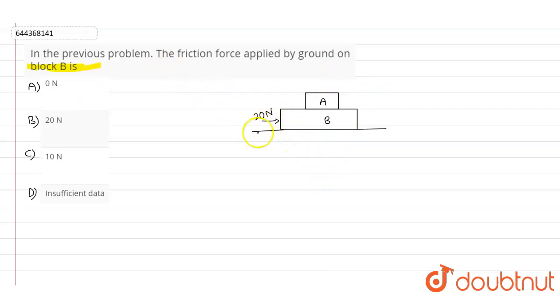In the previous problem, this was the diagram. The given data was: velocity of the block was 10 meters per second, and friction force between B and A equals 20 newtons.